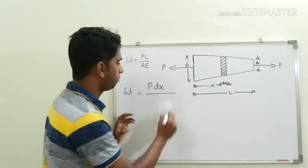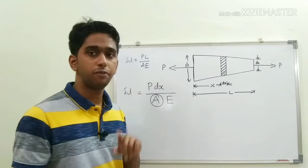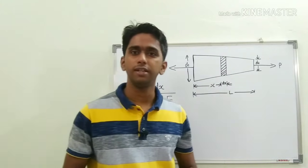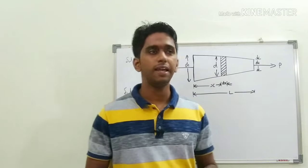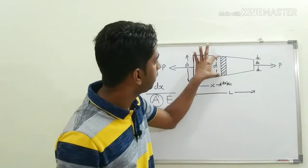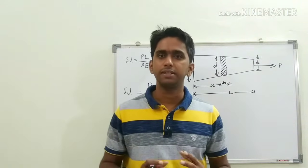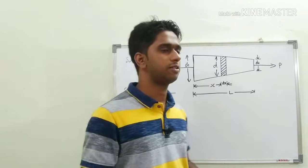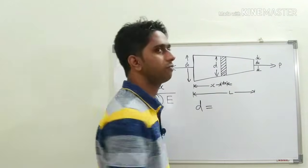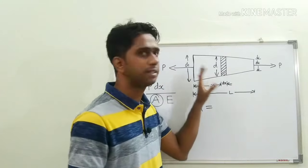We have to find the cross-sectional area at this section. To find the area, we first need to find the diameter D at this cross-section, then area = (π/4)D². So our first step is to find the diameter of the differential element. The diameter also varies with respect to x, just as the area does.